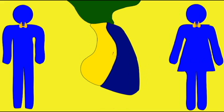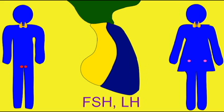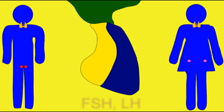The anterior pituitary synthesizes two hormones which are collectively known as the gonadotropins — hormones which control the secretion of hormones from the gonads. These are FSH, follicle stimulating hormone, and LH, luteinizing hormone. Although these two hormones are named for their roles in the menstrual cycle in women, they are just as important for hormone secretion and fertility in men.